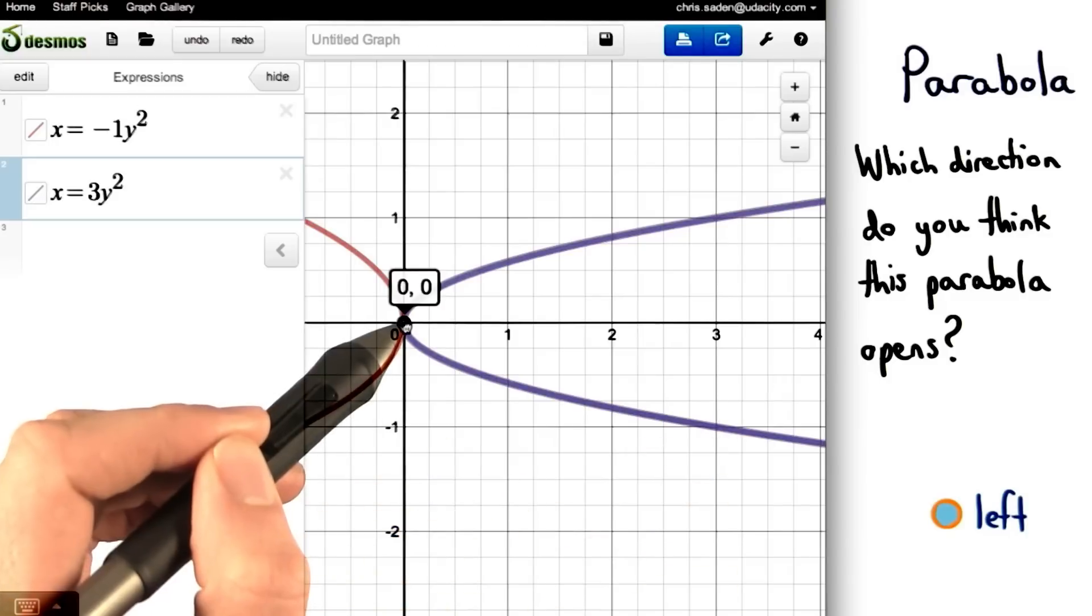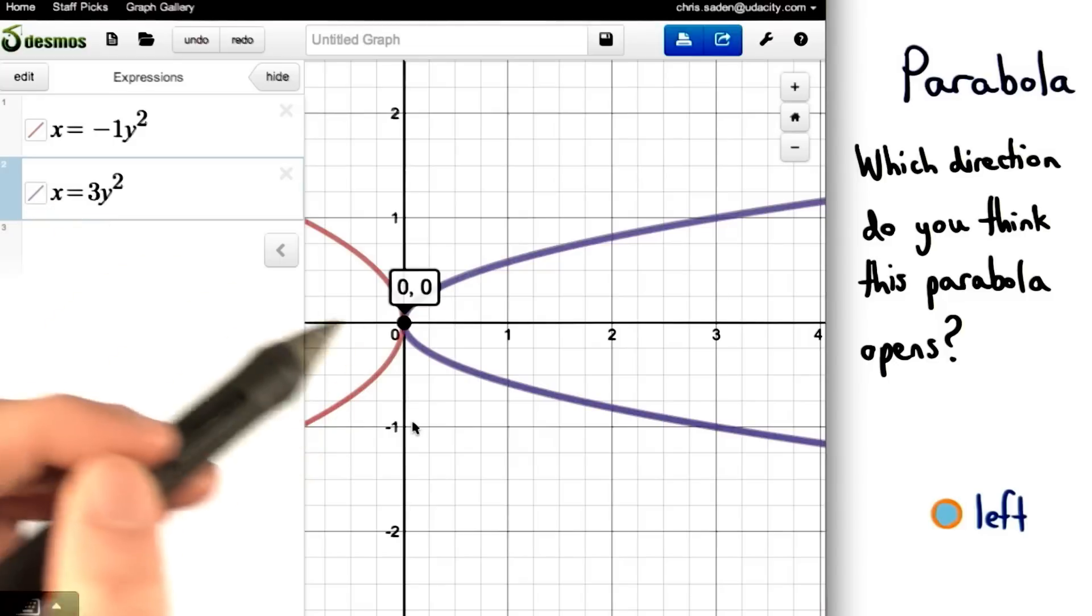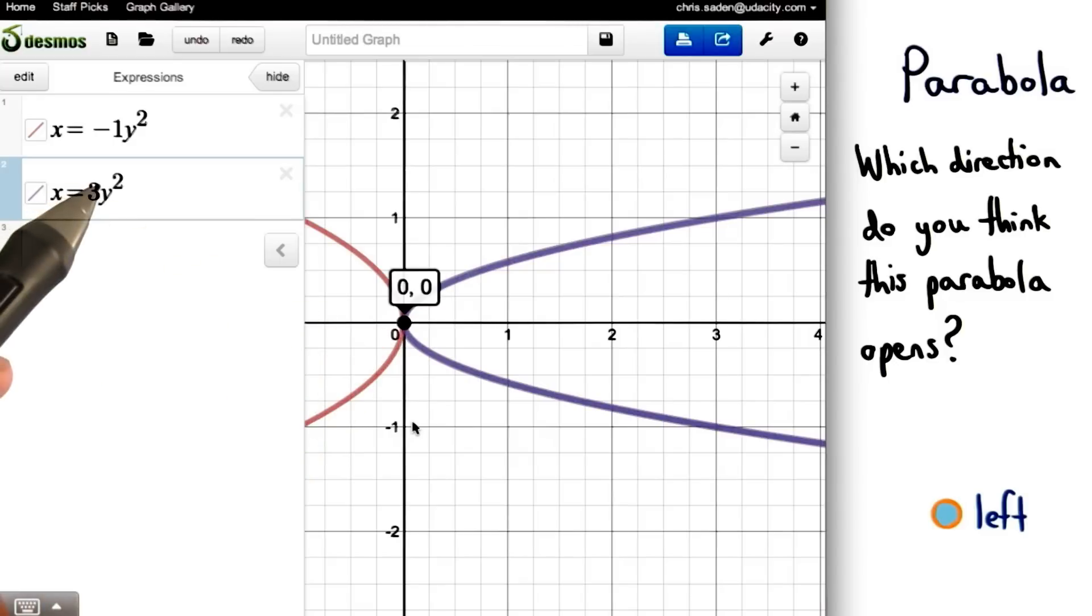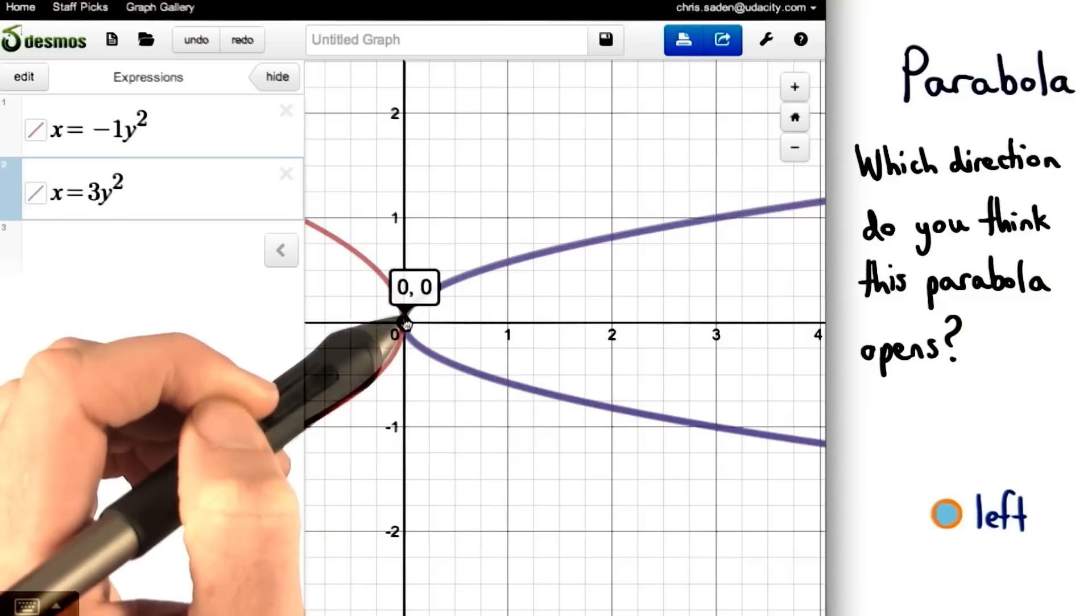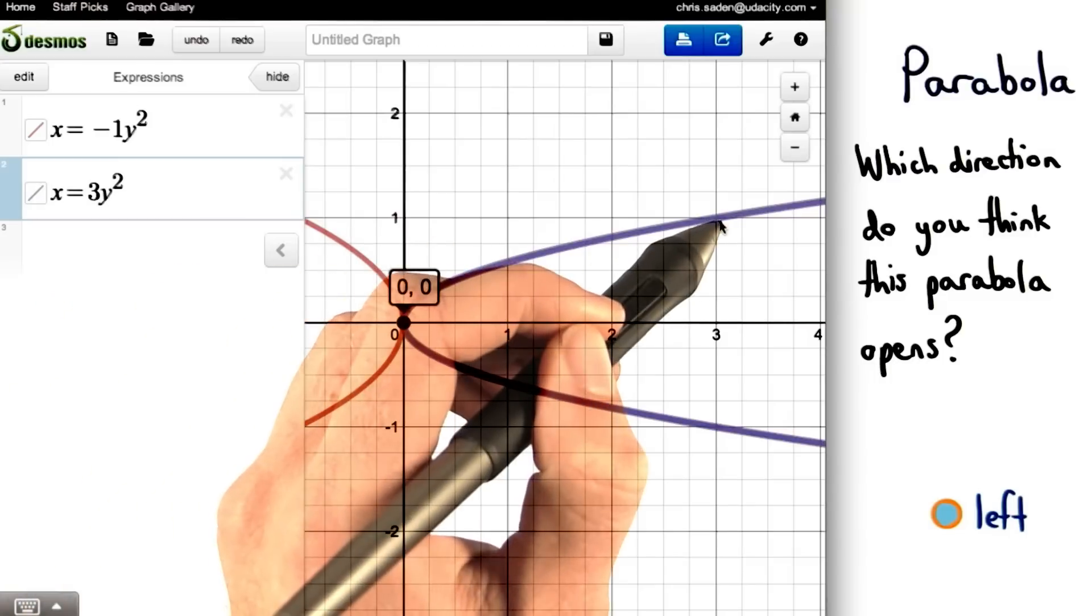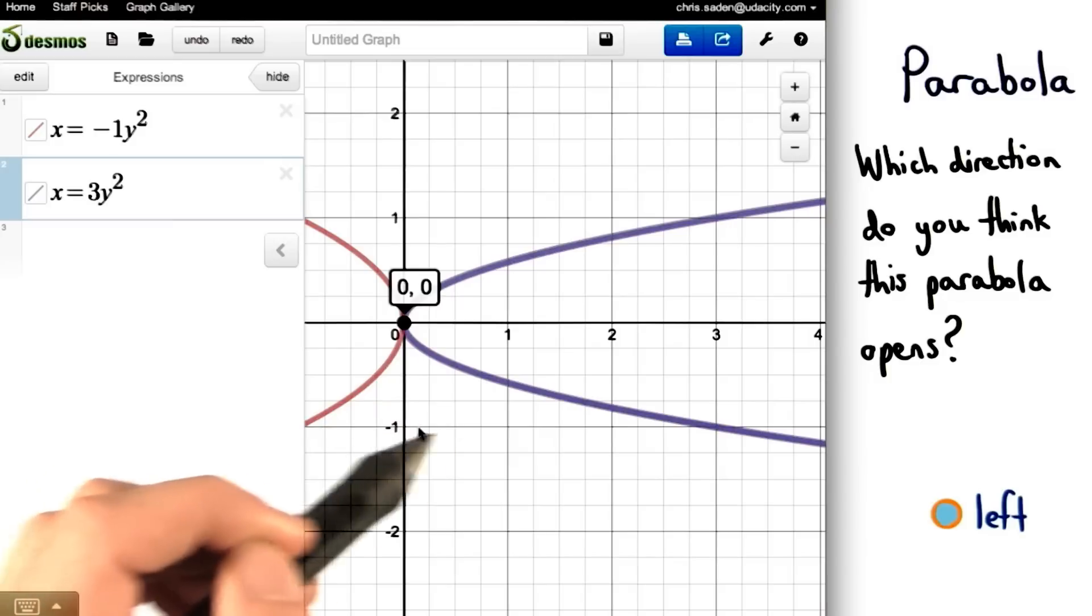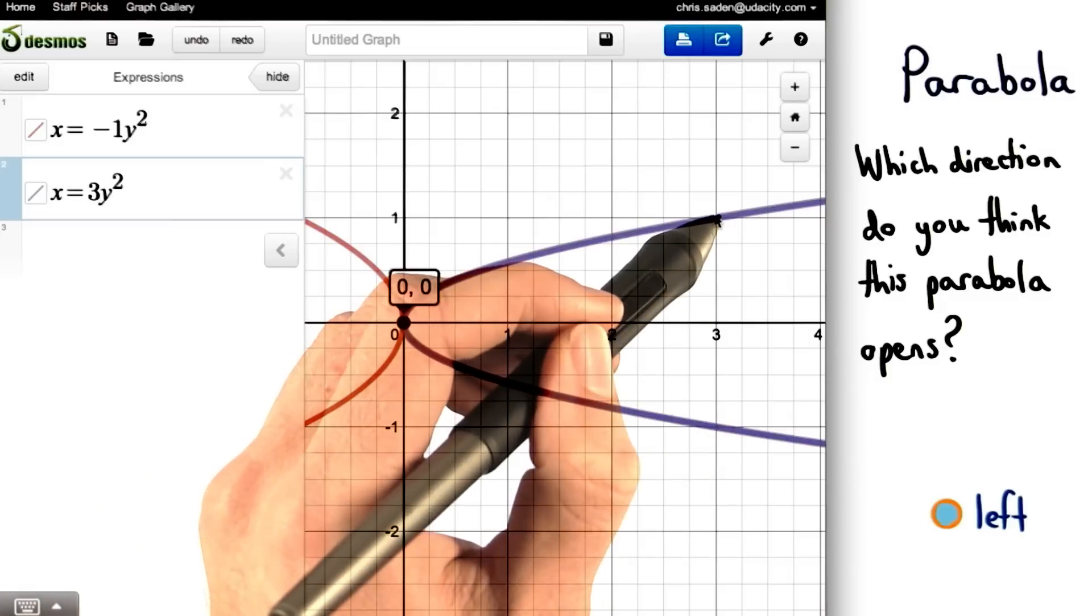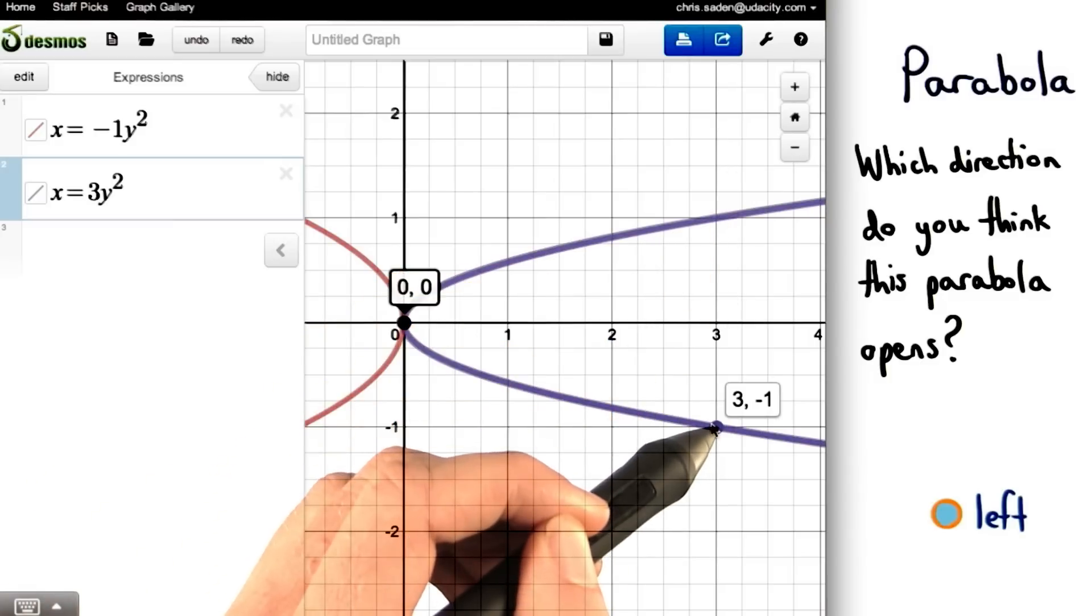We start at the vertex and we go 1 unit up and 1 unit down since we're in the form x equals. And this time we're going to go 3 units right since the a value is positive 3. So we'll go 1 unit up and 3 units right, 1 unit down and 3 units right. This gives us the other two points on our parabola.